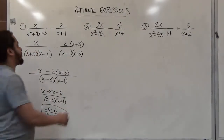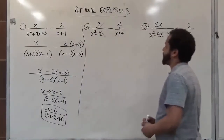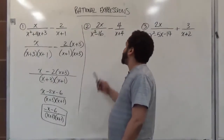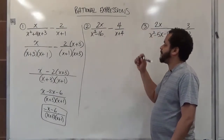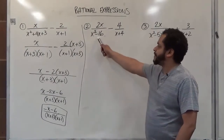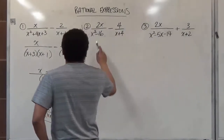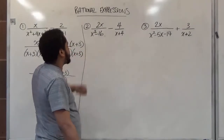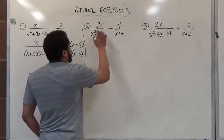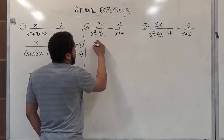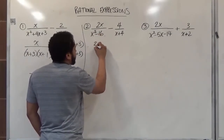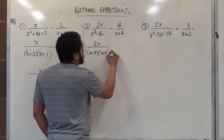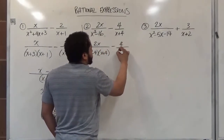In problem two we have 2x divided by x squared minus sixteen, minus four over x plus four. Here we have a difference of two squares, which makes factoring easier. We factor x squared minus sixteen as (x minus 4)(x plus 4), and we can see that x plus four is already one of those factors on the right side.